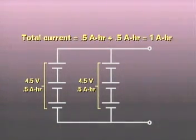Since currents arranged in parallel are additive, we add the 0.5 ampere hour rating of each string to get a total of 1 ampere hour as our current rating.